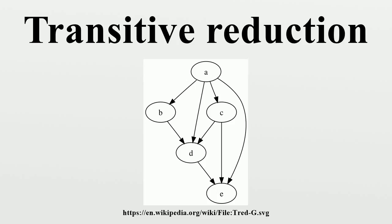Transitive reduction has been used on networks which can be represented as directed acyclic graphs to reveal structural differences between networks. In a finite graph that may have cycles, the transitive reduction is not uniquely defined. Additionally, it may be the case that none of these minimal graphs is a subgraph of the given graph.